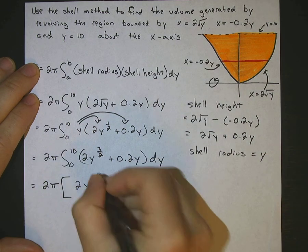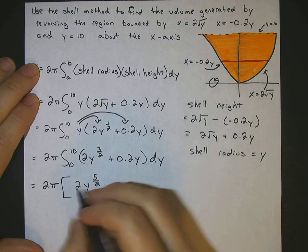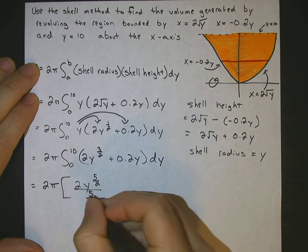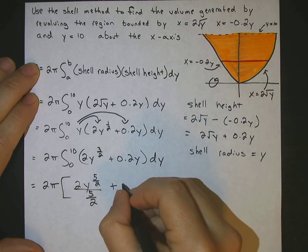So we get 2y to the 5 over 2, because you add 1 to that exponent. Whatever your new exponent is, you divide by that. Divide by 5 over 2. Okay, plus 0.2.